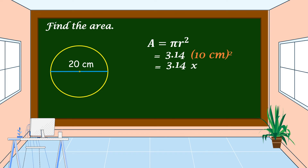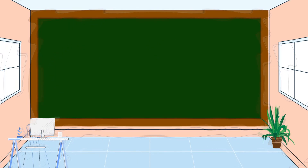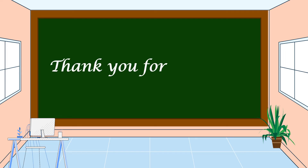Let's solve: 3.14 times 10 centimeters times 10 centimeters is equal to 100 centimeters squared. Let's multiply 3.14 times 100 centimeters squared. The area is equal to 314 centimeters squared. This is the area of this circle having a diameter of 20 centimeters. I hope that you understand our lesson for today. Thank you for watching!